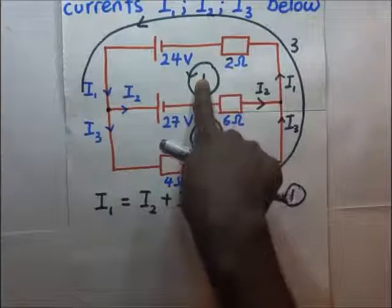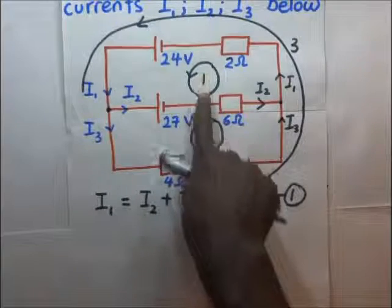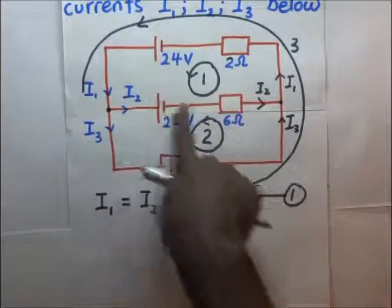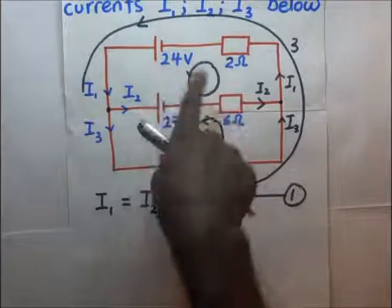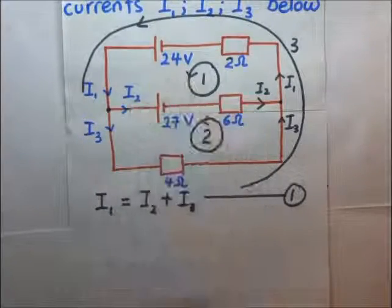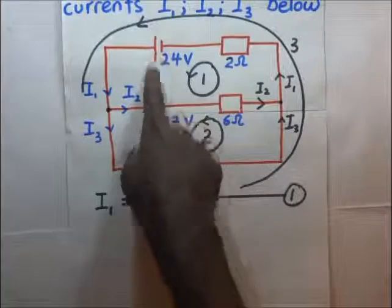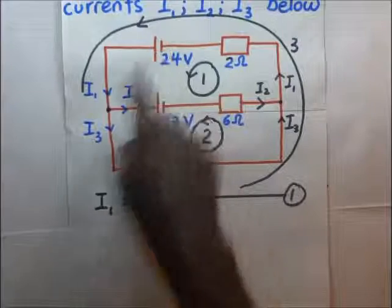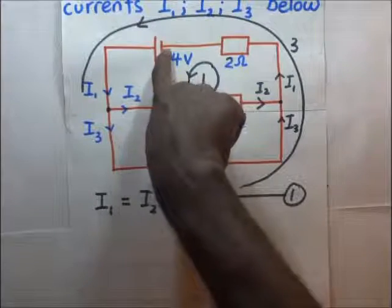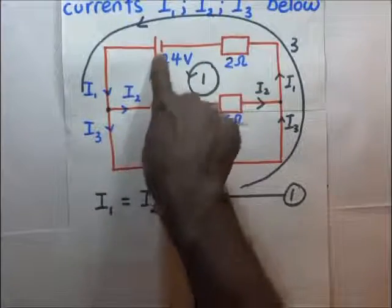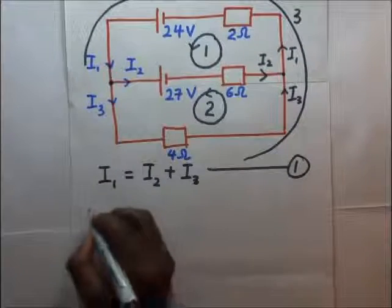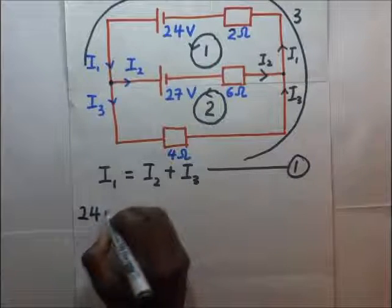Let's look at the first loop. Remember we said that the algebraic sum of all the voltages within a closed loop is equal to zero. In this loop we have resistors and two sources of EMF. We have the 24 volt EMF — the loop is in the correct direction, coinciding with the direction of flow of current. Within the cell, current flows from the negative terminal to the positive terminal, so since the loop is in the same direction, these 24 volts are positive.